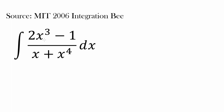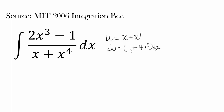We wish to integrate 2x cubed minus 1 divided by x plus x to the fourth. The first thing you may think of is letting u be x plus x to the fourth, to achieve something similar to 2x cubed minus 1 as your du. When you differentiate this, you get 1 plus 4x cubed dx, but notice that 1 plus 4x cubed isn't quite 2x cubed minus 1.